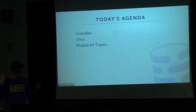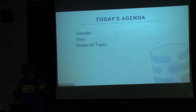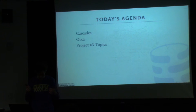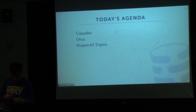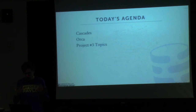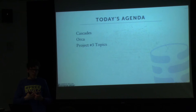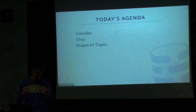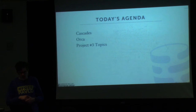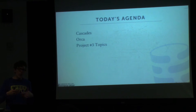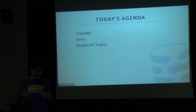Today is part two of our discussion on optimizers. We're going to be discussing the Cascades Optimizer implementation in a little more detail, and then we'll go over at a high level what the Orca optimizer — the paper you guys read about — was actually doing. Orca is a modern implementation of the Cascades framework, and it's an interesting paper to see what you have to worry about when you actually put an optimizer in a real system.